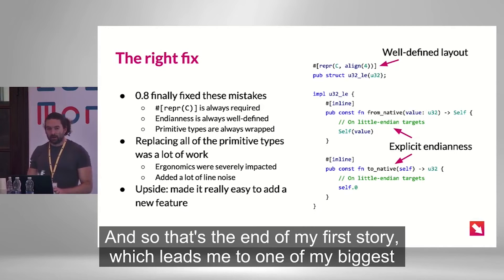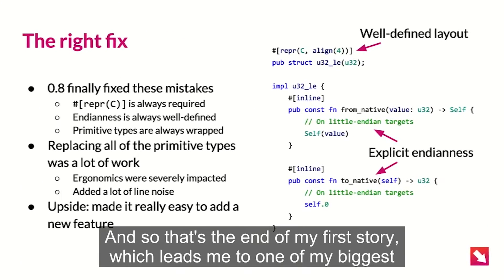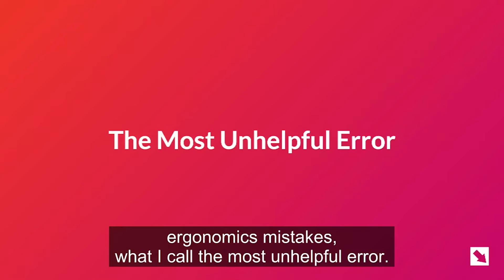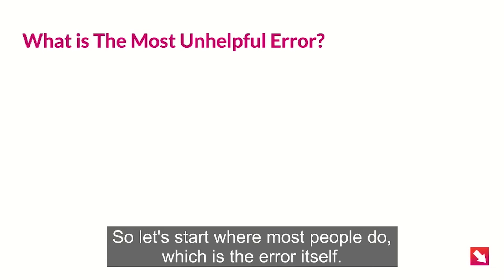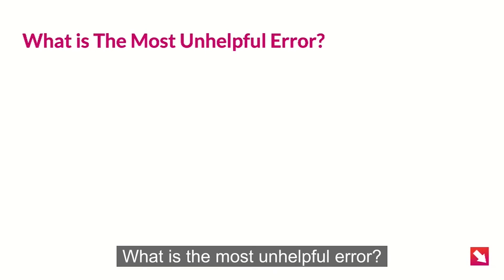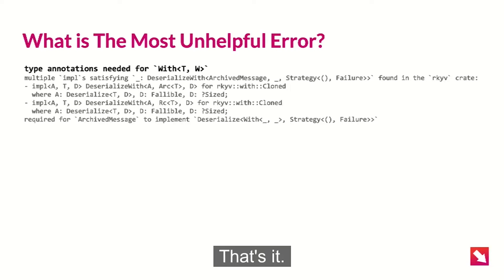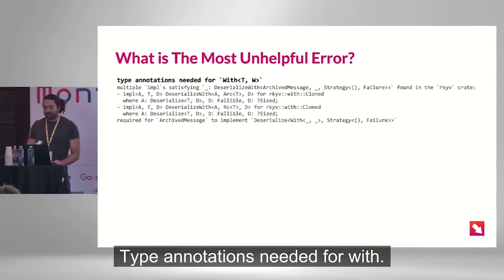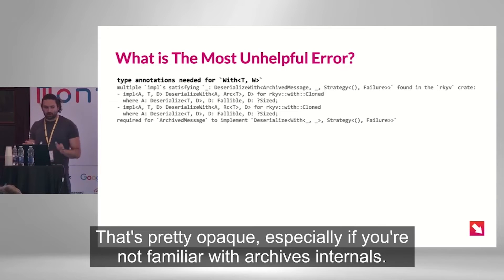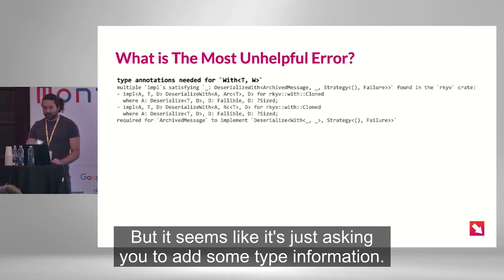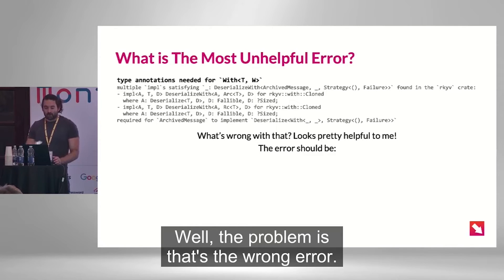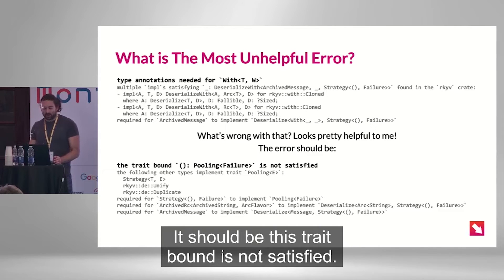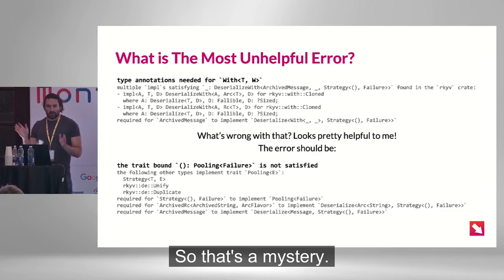And that leads me to one of my biggest ergonomics mistakes — what I call the most unhelpful error. Let's start where most people do, which is the error itself. The most unhelpful error? It's this: 'Type annotations needed for width.' That's pretty opaque, especially if you're not familiar with Archive's internals. It seems like it's just asking you to add some type information, so what's wrong with that? Well, the problem is that's the wrong error. It should be: 'This trait bound is not satisfied.'